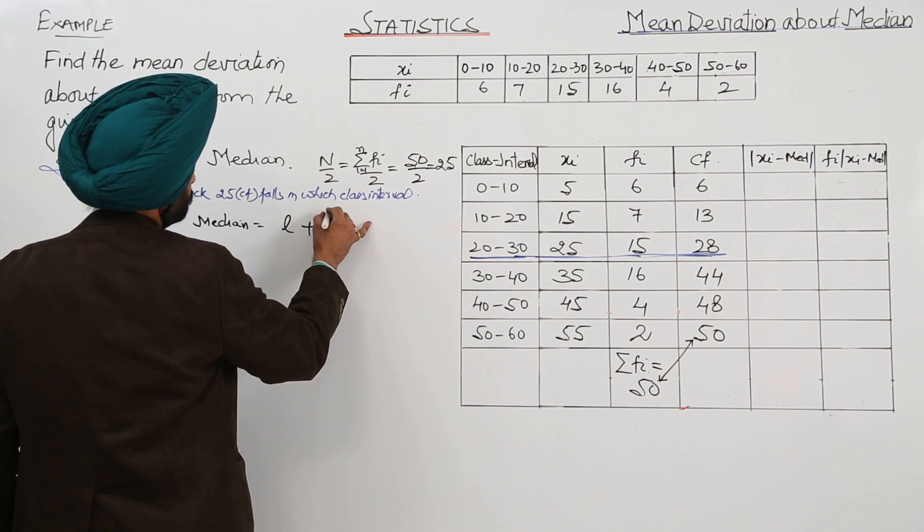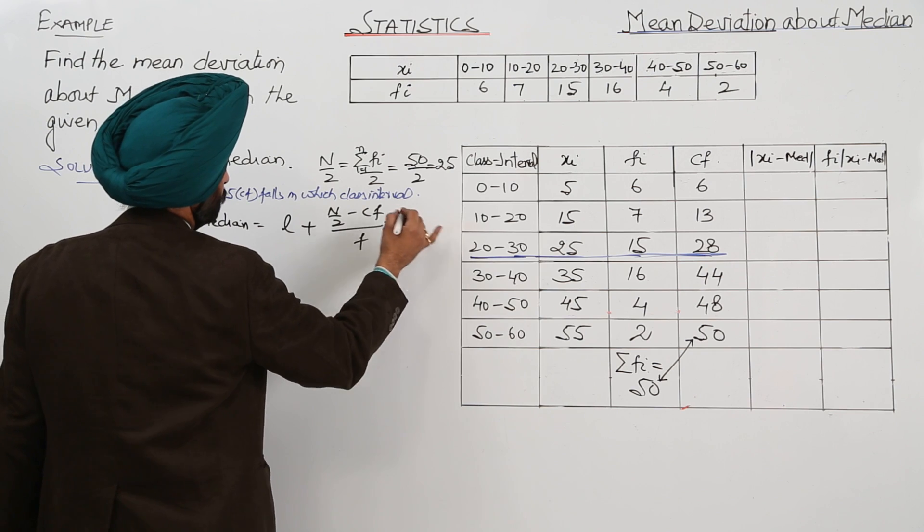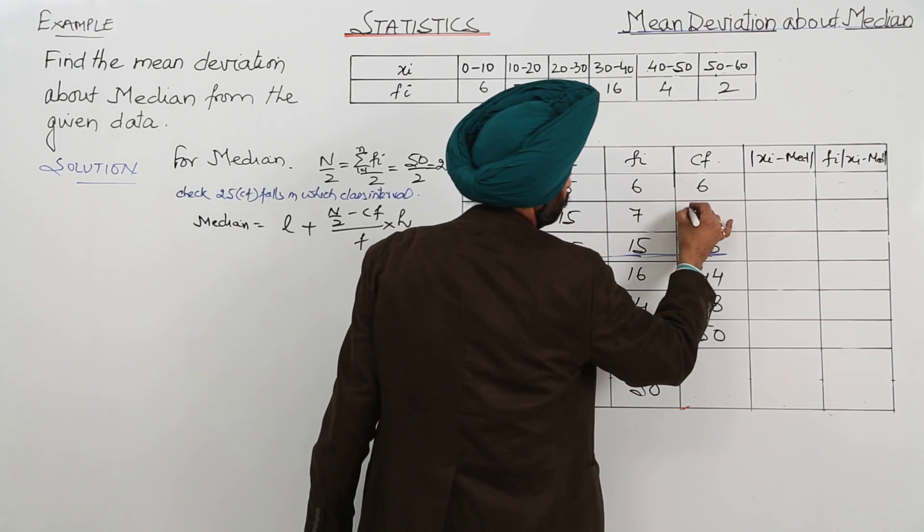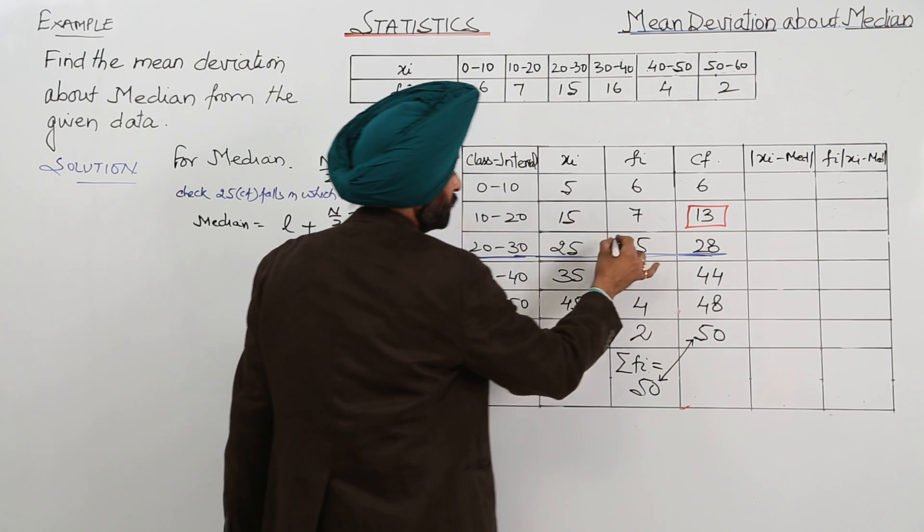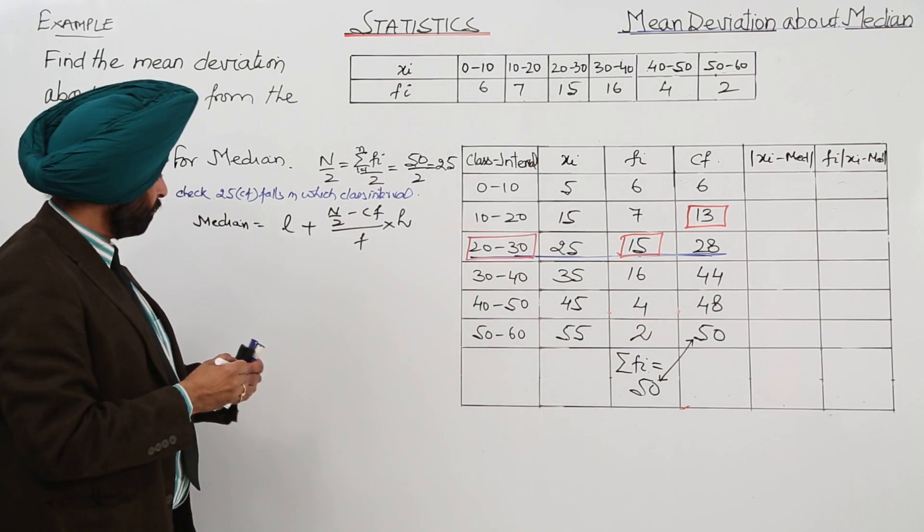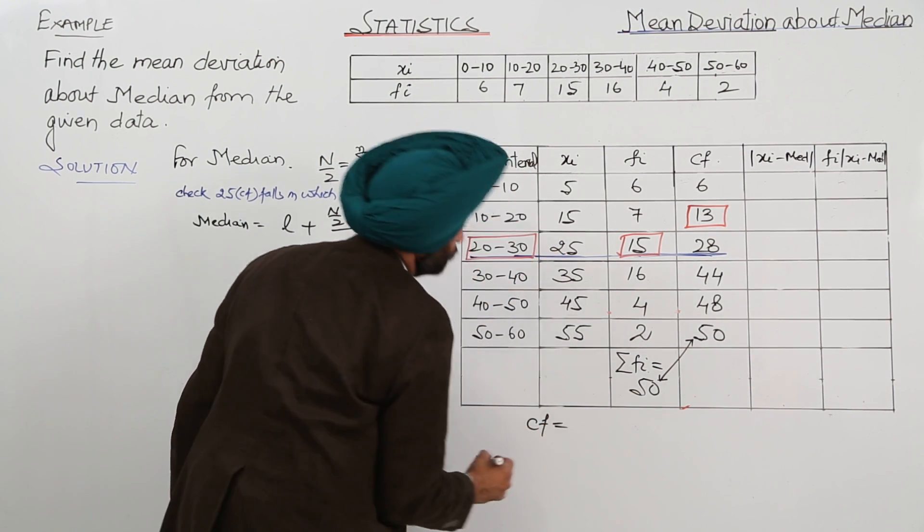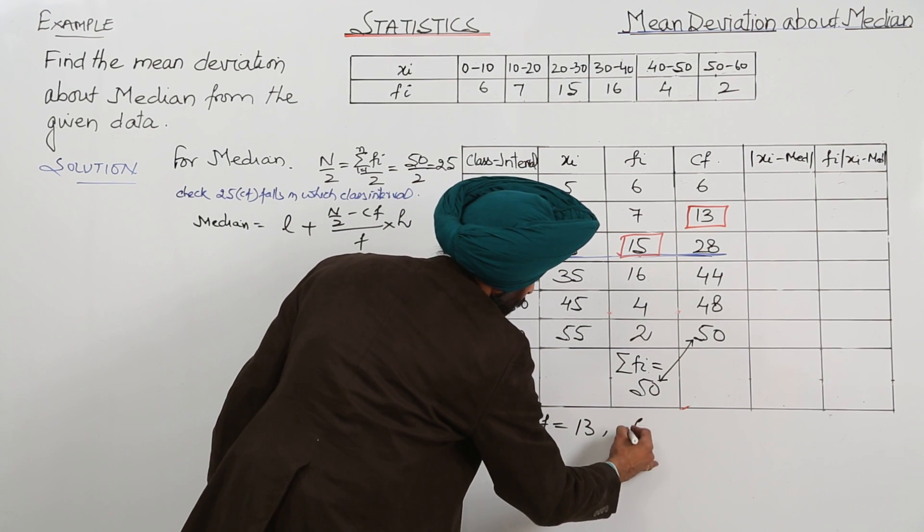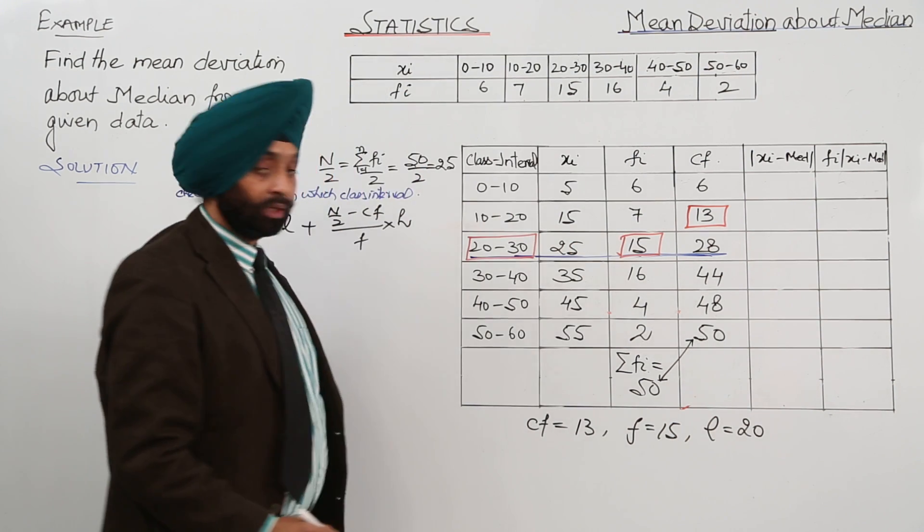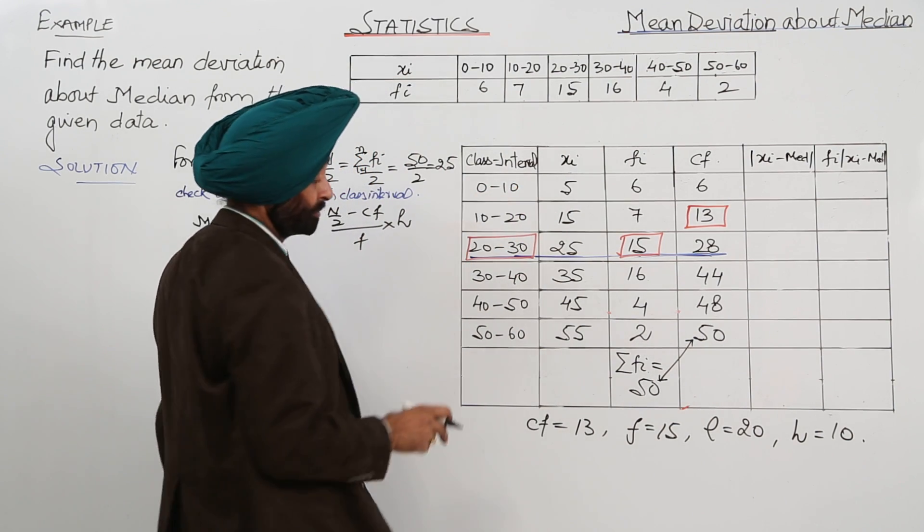Median is equal to L plus n by 2 minus CF upon F into h. CF preceding the class interval. CF is equal to 13, F is equal to 15, L is equal to 20. L is the lower limit, and h is equal to width of the class size, that is 10.